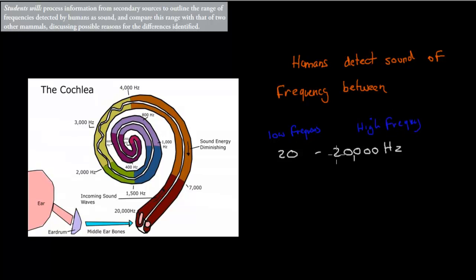So we can hear anything between 20 and 20,000 Hz. And if you remember from the cochlea video two videos back, when the eardrum moves and the ossicles move, that vibrates the bones, and eventually the liquid is vibrated and pushed inside the cochlea. How far it travels determines what kind of pitch we hear.